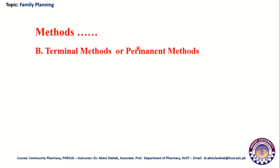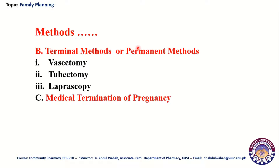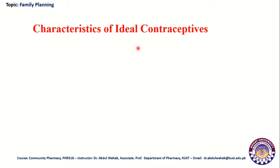The second main category of family planning methods is terminal or permanent methods, which are further divided into vasectomy, tubectomy, and laparoscopy. These three are the subtypes of terminal or permanent methods. The third main category is medical termination of pregnancy. That covers the classification of the different family planning methods.